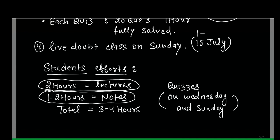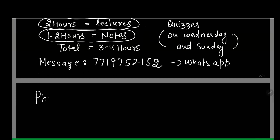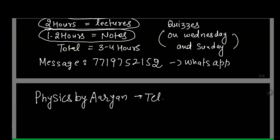If any student has any question, you can message my team on WhatsApp at 77197521 52. My team will reply as quickly as possible. I also recommend you all to join the Physics by RN Telegram channel, where you can message me as well. I will be happy to help with any query you have.